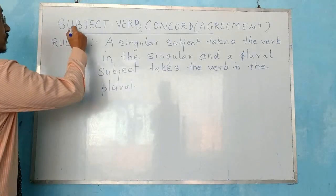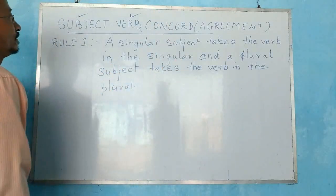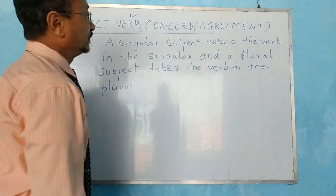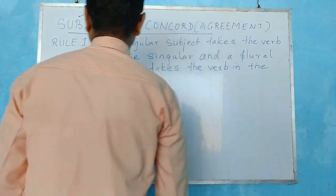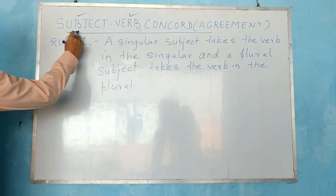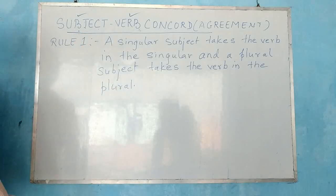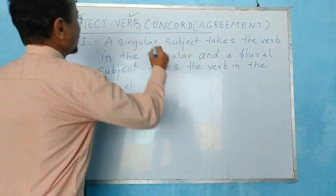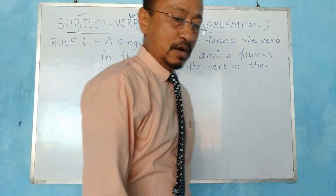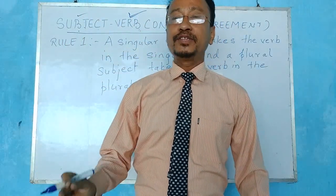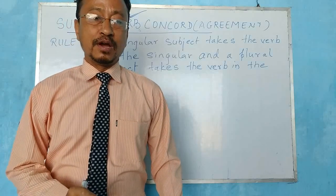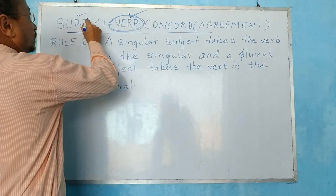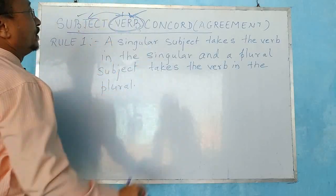What is subject-verb concord? It means that the subject and the verb should always agree in number and person. What is a subject? A subject is a person or thing about which we talk, whereas the verb is the main verb. As you know, the verb is the backbone of English. A sentence is incomplete without a verb. So these two have to agree in number and person.